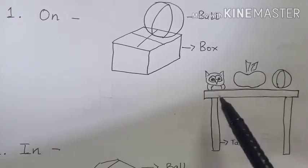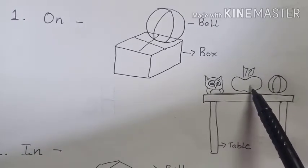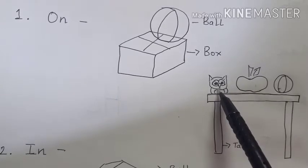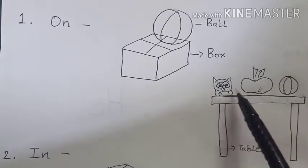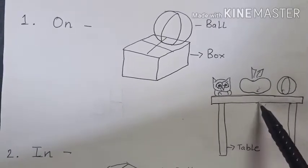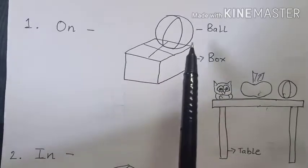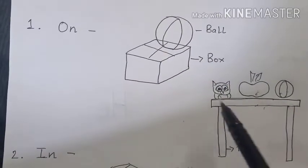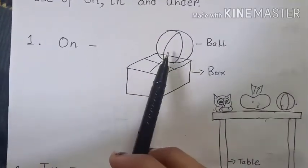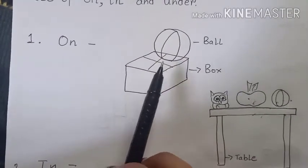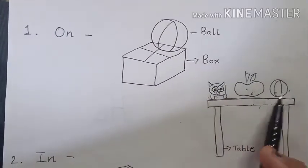Here, this is a table. Table ke oopar kya hai? An apple, a ball, and an owl. These three things are on the table. Yeh tino chiz table ke oopar hai. Jabb bhi kuch saman kisi chiz ke oopar hota hai, hum 'on' word use karte hai. The ball is on the box. These things are on the table. We use 'on' when something is on top of something.